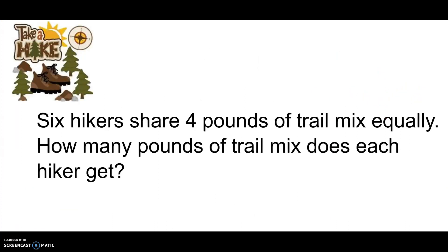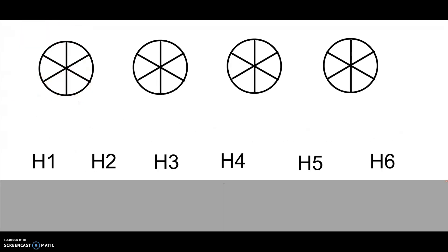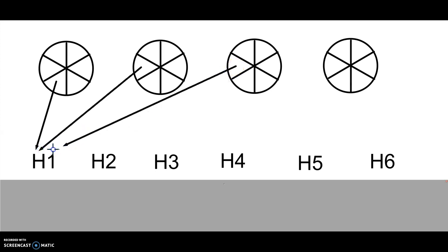Six hikers share four pounds of trail mix equally. How many pounds of trail mix does each hiker get? Pause the video and solve. I'm keeping my sketches simple — these are my four pounds of trail mix, and H1 through H6 for hikers 1 through 6. I divided the four pounds into six equal parts, and I'm going to give each hiker one of the six from each pound of trail mix.